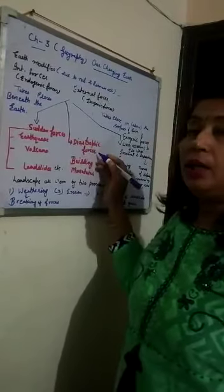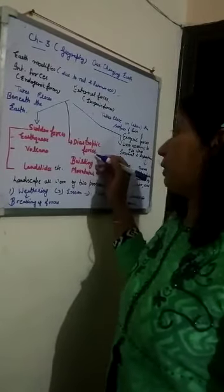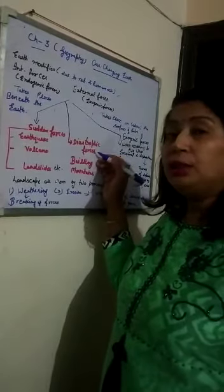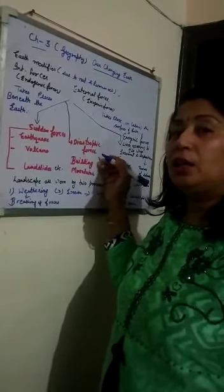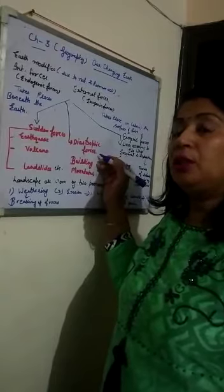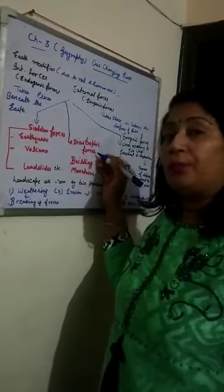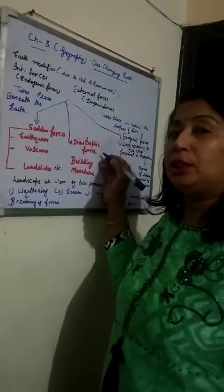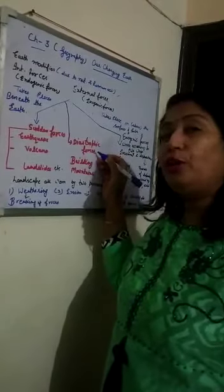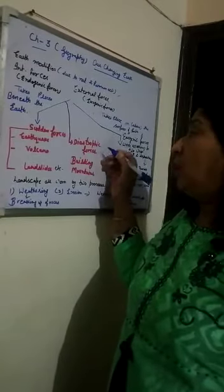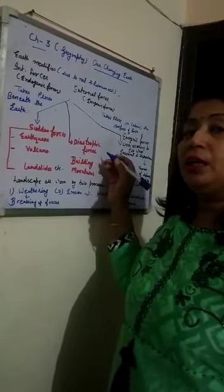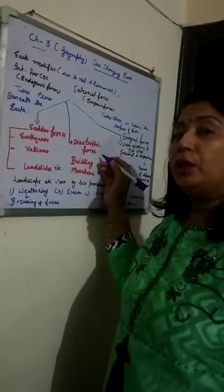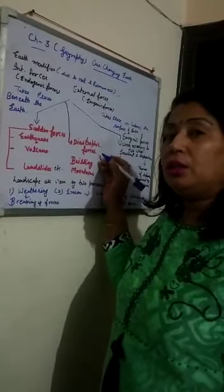These catastrophic forces change the earth's surface — the shape and size of the earth's crust is changed by them. This kind of effect is produced due to the folding and faulting of the earth's crust.